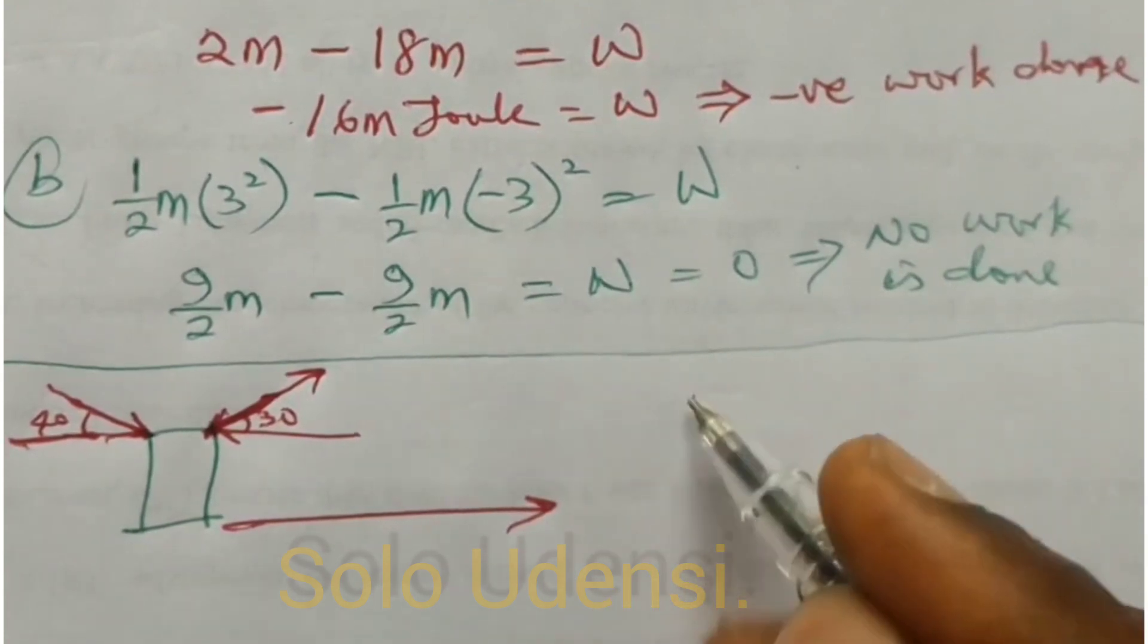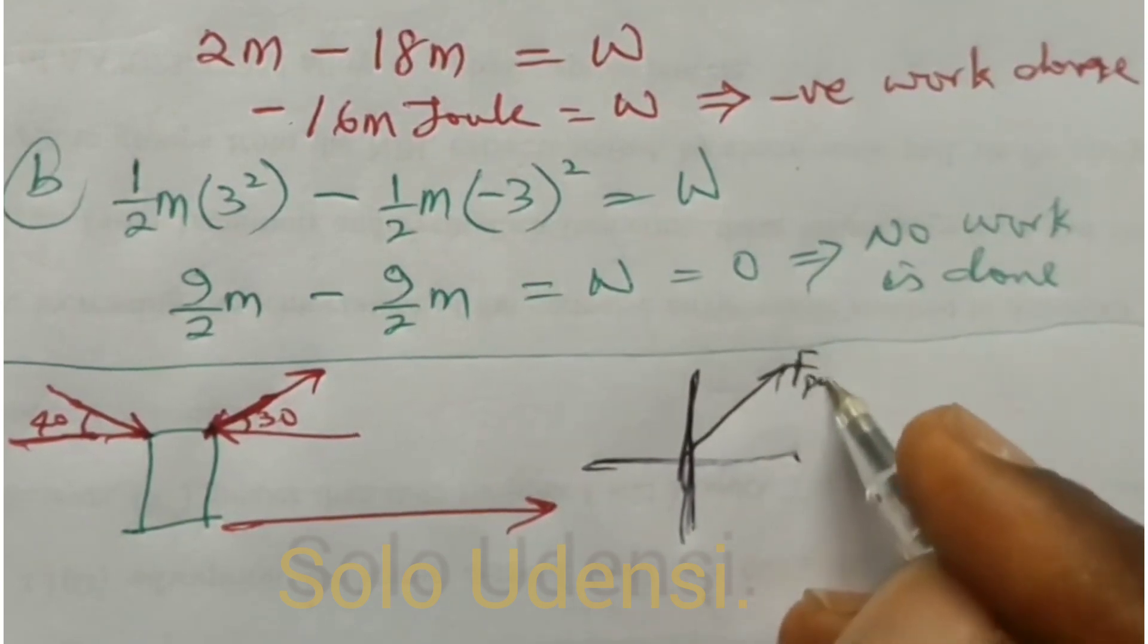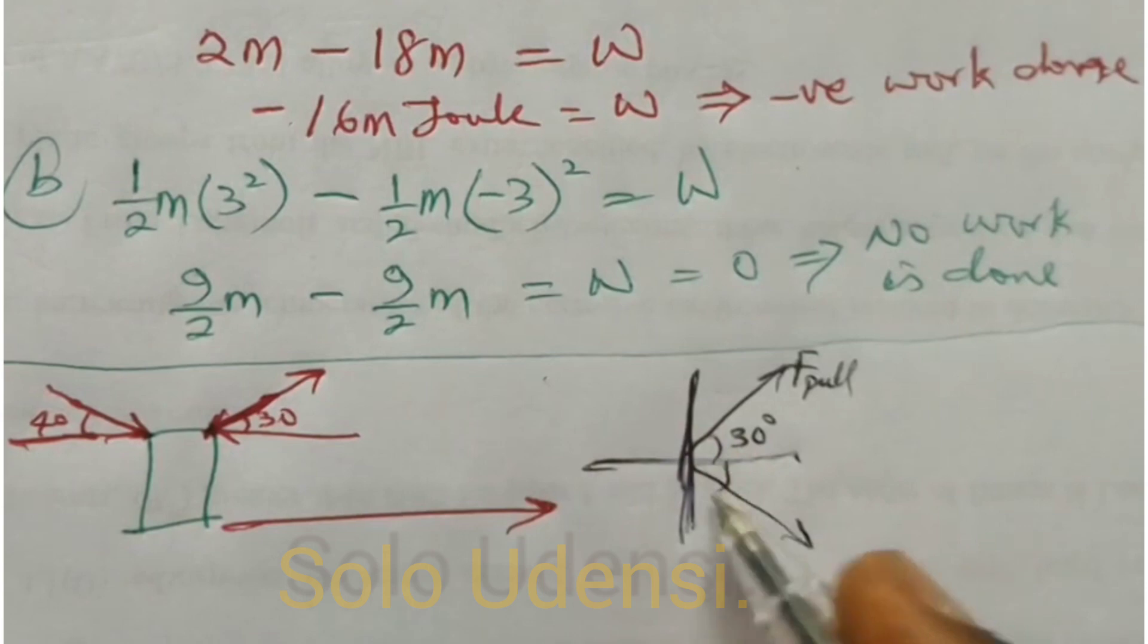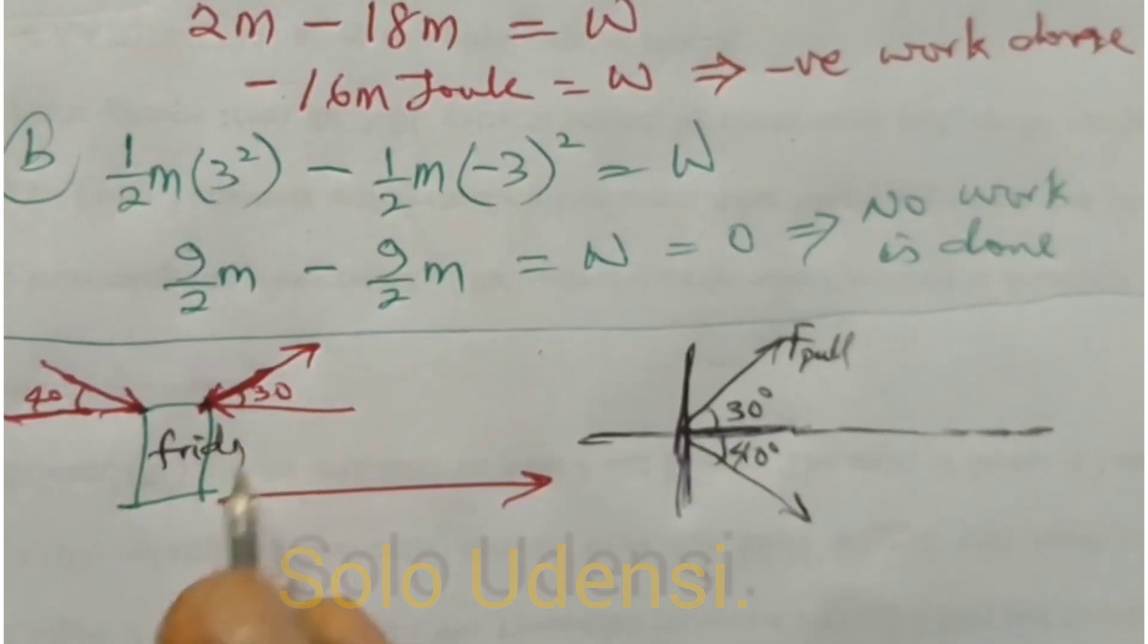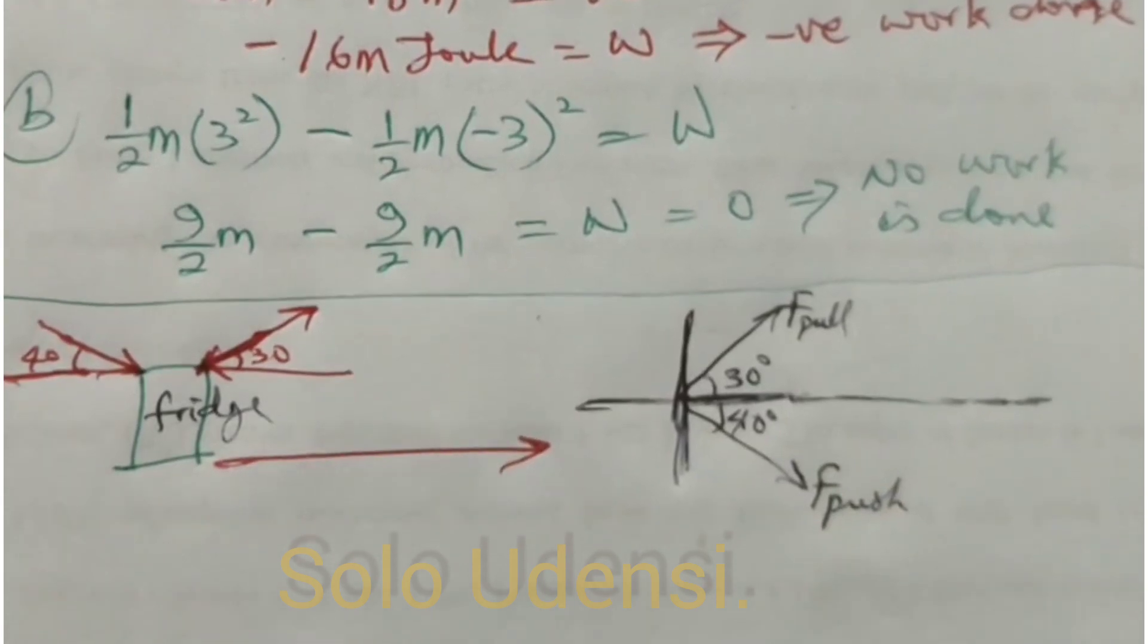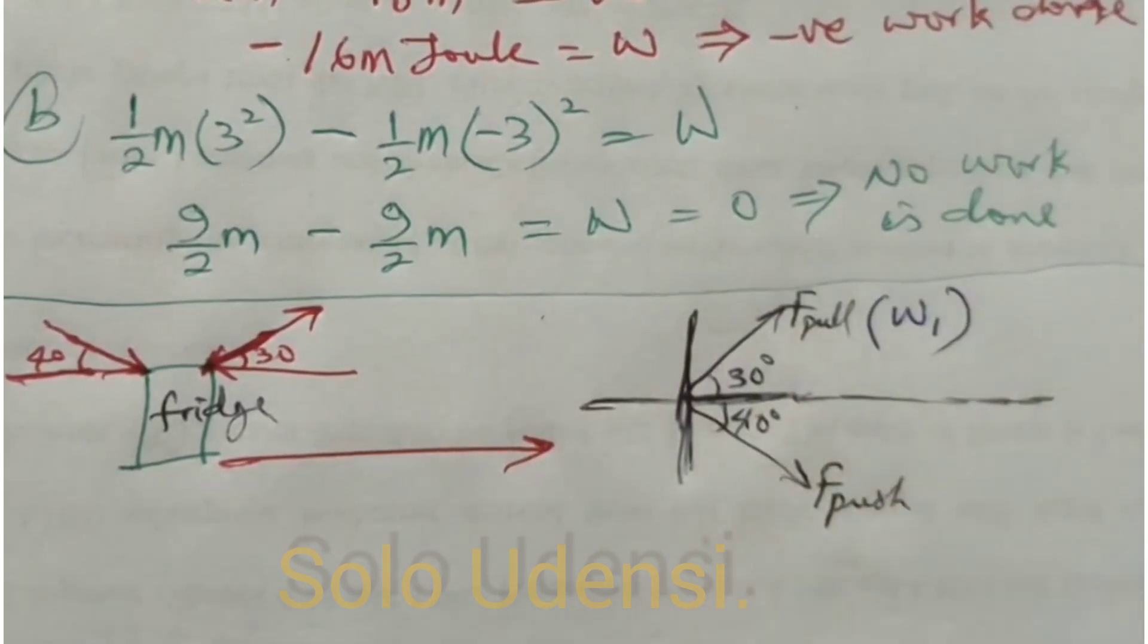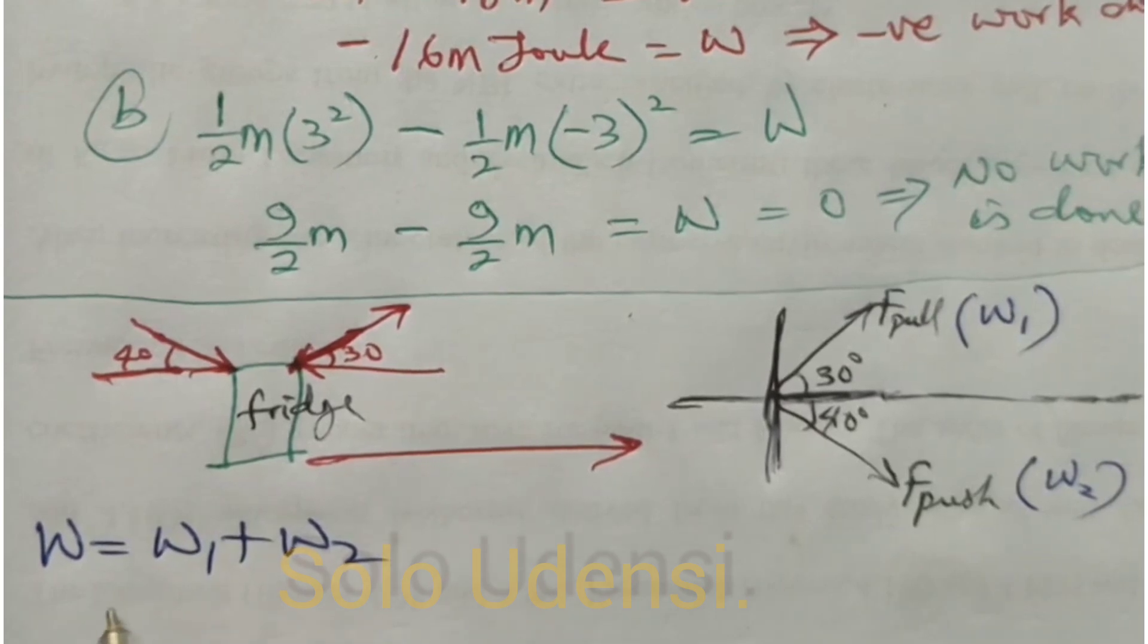So all you have to do is to do a free body diagram where this one is pushing so it will go this way at 40 degrees. You are going to get the force, the constant force that is in the actual direction of that fridge. For this one, this is Fpush. That means that you are going to find the work done by F pull, let it be W₁, while the work done by Fpush, let it be W₂, so it means that your total work done will be W = W₁ + W₂.